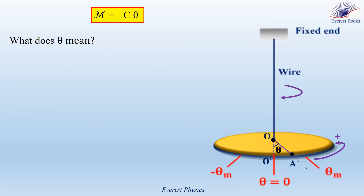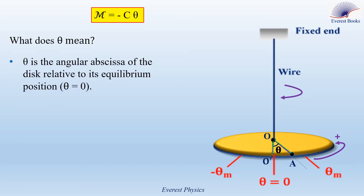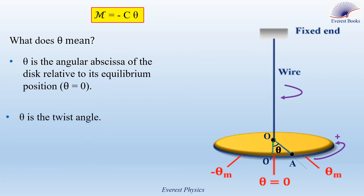We have the moment of the restoring couple M equals minus C theta. Theta is the angular abscissa of the disc relative to its equilibrium position (theta equals zero). When the radial section of the disc is in position OA, it makes an angle theta with the equilibrium position OO'. So theta is also the twist angle. The SI unit of theta is the radian.